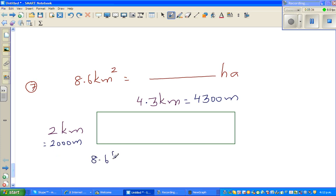So I can say 8.6 kilometers squared, what I did is I wrote it first as 2 kilometers times 4.3 kilometers, and that I changed to 2000 meters times 4300 meters.